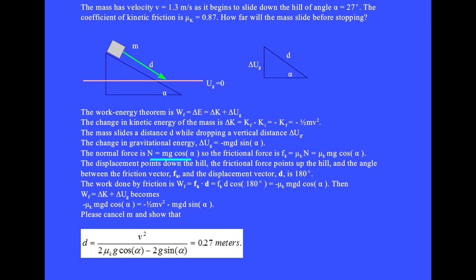The normal force is N equals mg cosine alpha, so the frictional force is fk equals mu k N equals mu k mg cosine alpha. The displacement vector points down the hill and the frictional force vector points up the hill. The angle between the friction vector and the displacement vector is 180 degrees. The work done by friction is the dot product of the friction vector and displacement vector, equals fk d cosine of 180 degrees. Inserting the frictional force, and since cosine of 180 degrees is minus one, this gives minus mu k mgd cosine alpha.